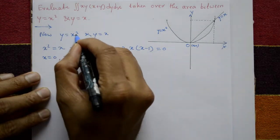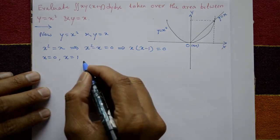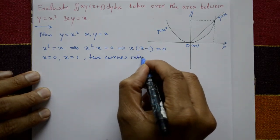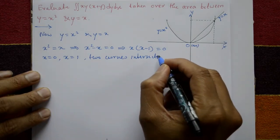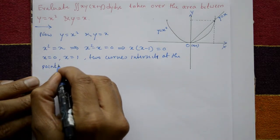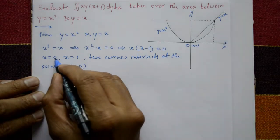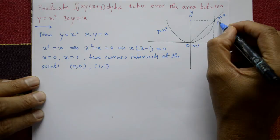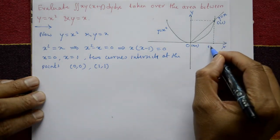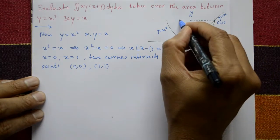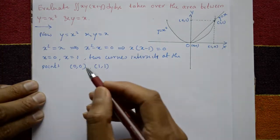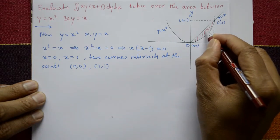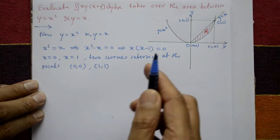Put x equals 0: y equals 0. Put x equals 1: y equals 1. So the two curves intersect at the points (0, 0) and (1, 1). This enclosed area between the parabola y equals x squared and the straight line y equals x is the region R.